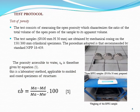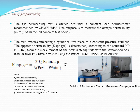The test protocol consists of measuring the open porosity, which characterizes the ratio of the total volume of open pores of the sample to its apparent volume. For gas permeability, the test consists of subjecting a specimen to a constant pressure gradient. The apparent permeability is determined according to standard.